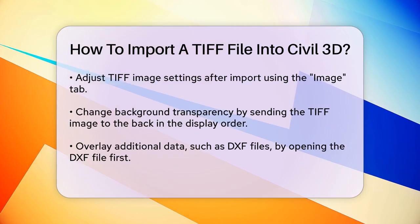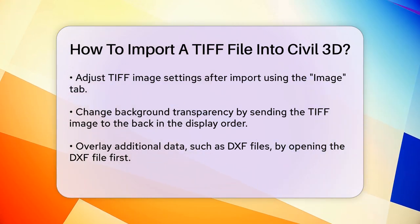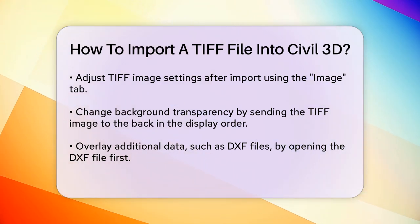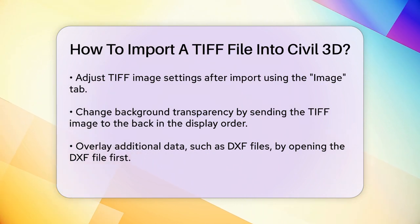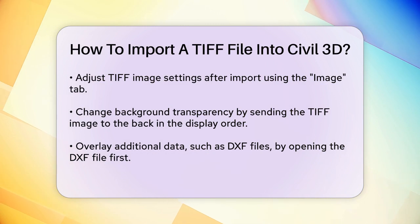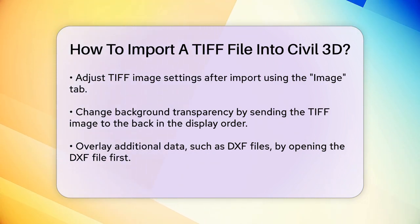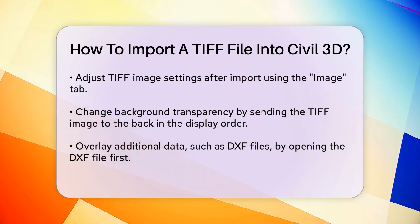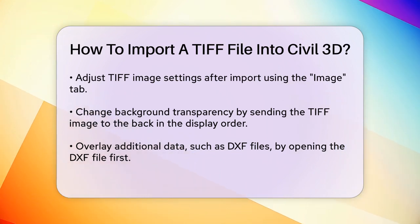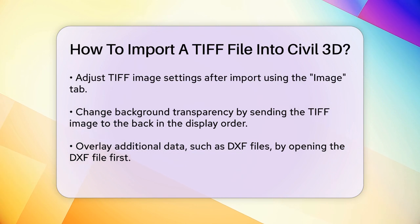Once the TIFF file is imported, you might need to adjust its settings. Select the TIFF image and the Image tab will be activated. You can change the background transparency by right-clicking on the image, hovering over Display Order, and selecting Send to Back. This will ensure the TIFF image is correctly overlaid with other data, such as contours or point clouds.